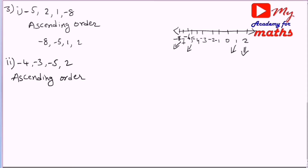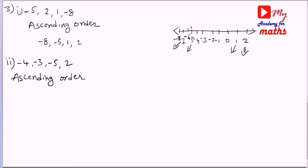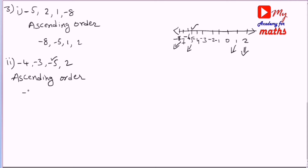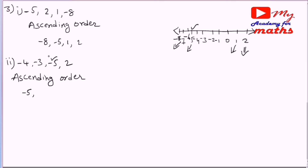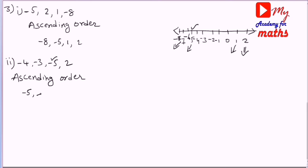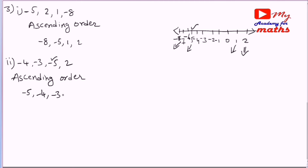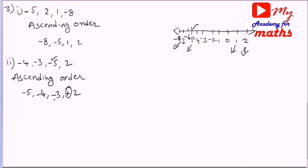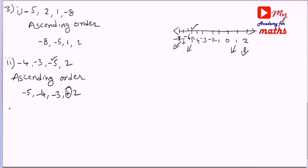Define the order. The number minus 5 is on the left side, then minus 4 on the right side, then minus 3, then plus 2. We can use the default symbol, starting with 2.